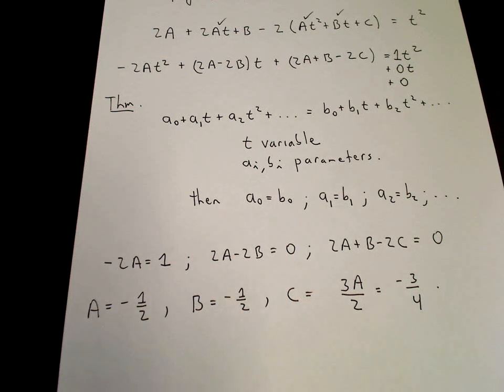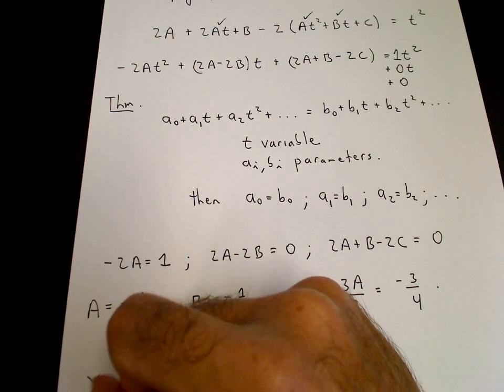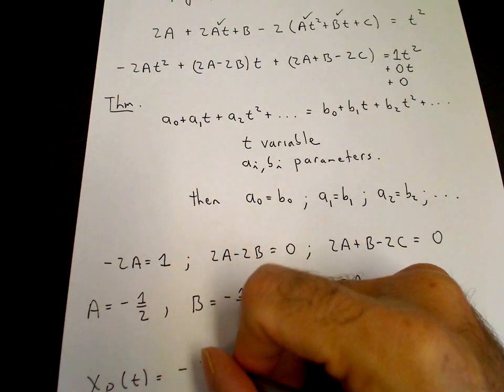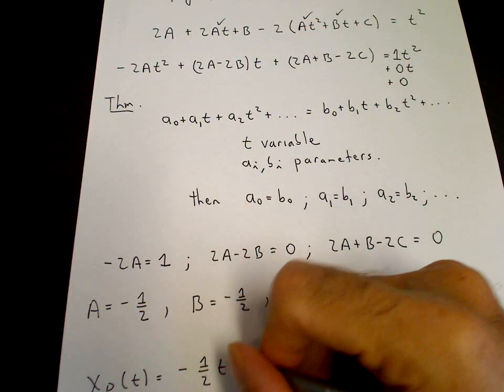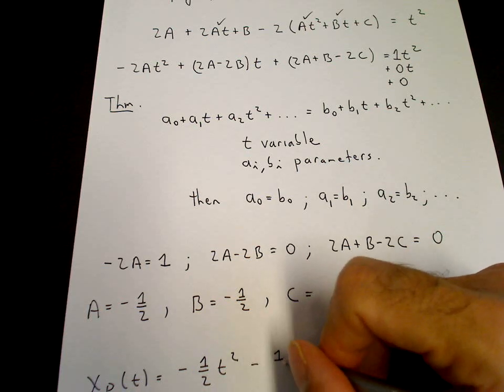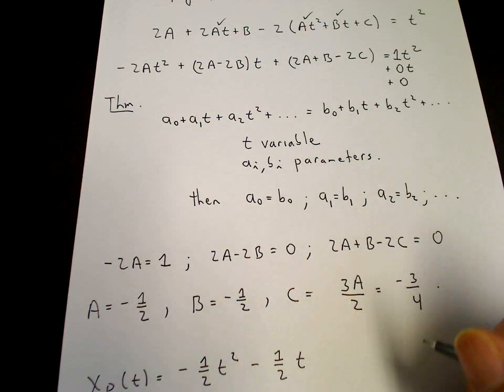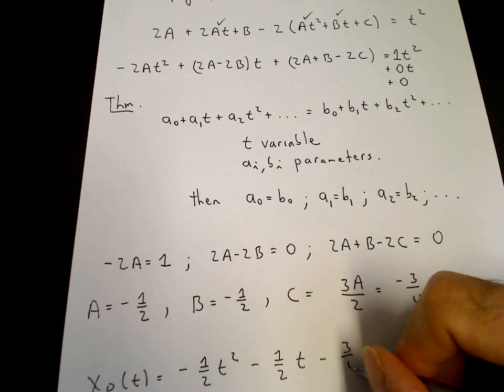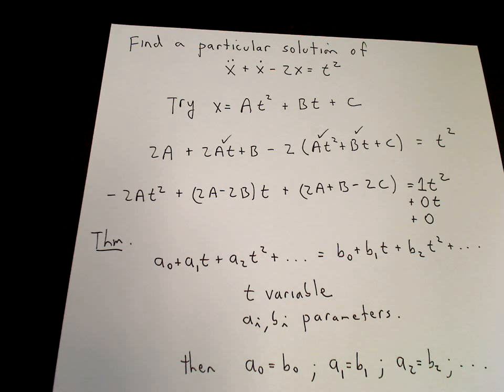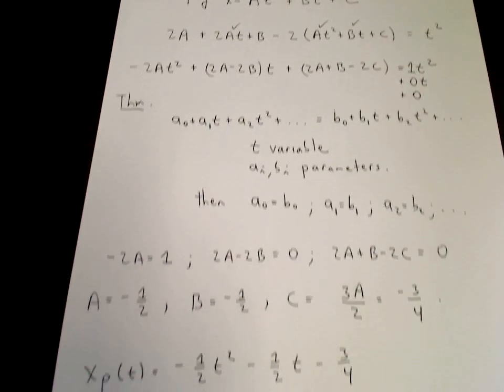And that gives us our particular solution: minus 1 half t squared plus minus 1 half times t plus minus 3 quarters. So that's the particular solution to this differential equation.